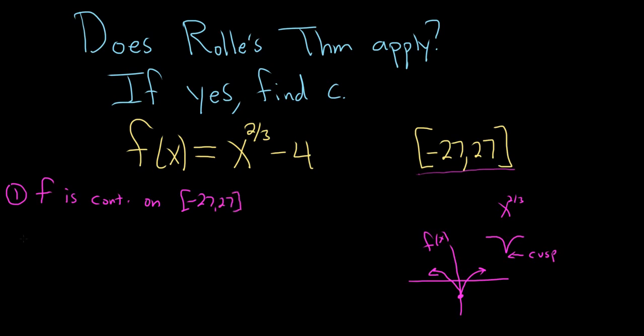But the second condition of Rolle's is that f has to be differentiable between negative 27 and 27. But right here at zero there's a cusp, and we know that whenever we have that in a graph the function is not differentiable. So f is not differentiable at x equals zero because you have the cusp feature, that sharp jagged edge. So Rolle's theorem does not apply. So no, it does not apply.